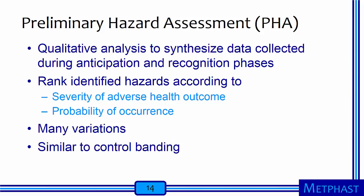We recommend a preliminary hazard assessment, or PHA, to provide a way to qualitatively synthesize the data collected during your research and walkthrough — the anticipation and recognition phase. When conducting a PHA, each hazard is ranked according to the severity of adverse health outcomes and the probability of the occurrence of exposures. There are many variations; I will show you one here, and I want to note that PHAs share many similarities to control banding.